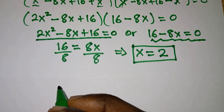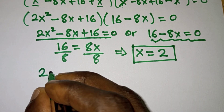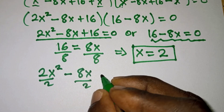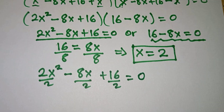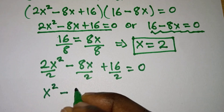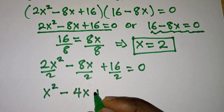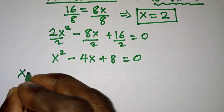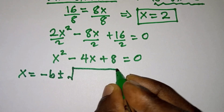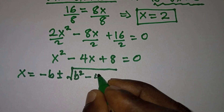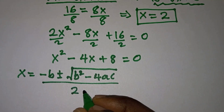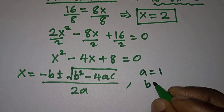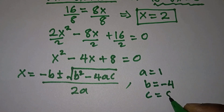Next we will consider the quadratic equation. We can simplify it by dividing through by 2: 2x squared divided by 2, minus 8x divided by 2, plus 16 divided by 2 equals 0, giving us x squared minus 4x plus 8 equals 0. Using the quadratic formula x equals negative b plus or minus square root of b squared minus 4ac, all divided by 2a, we identify a equals 1, b equals negative 4, and c equals 8.